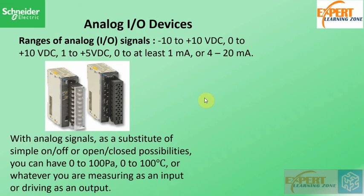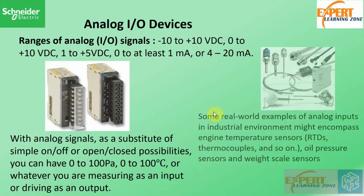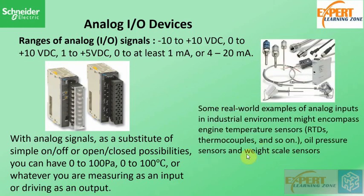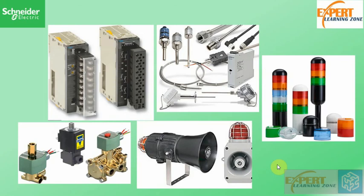With analog signals, instead of simple open/close possibilities, you can have 0 to 100 pascal, 0 to 100 degrees, or whatever you are measuring as an input or driving as an output. Some real world examples of analog inputs in an industrial environment might encompass an engine temperature sensor — that is to say a resistance temperature detector or a thermocouple — or an oil pressure sensor, as well as weight scale sensors.